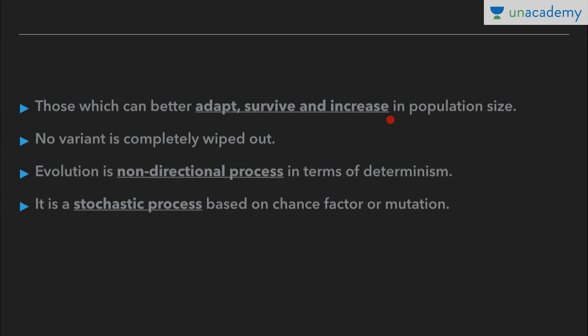Those which can better adapt survive and increase in population size. If we have a mixed population with different varieties, those which adapt better will survive and increase. Notably, no variant is completely wiped out — we have seen that both varieties of moth existed before and after industrialization. Evolution is a non-directional, stochastic process based on chance factors and mutations — it is random, based on chance events in nature and chance mutations in organisms.